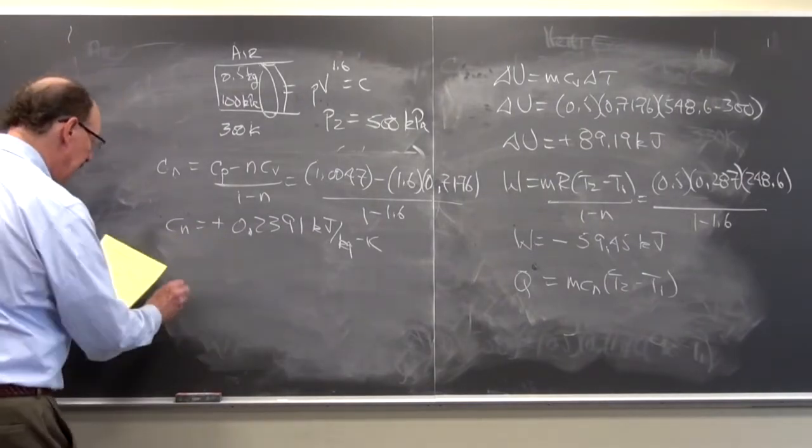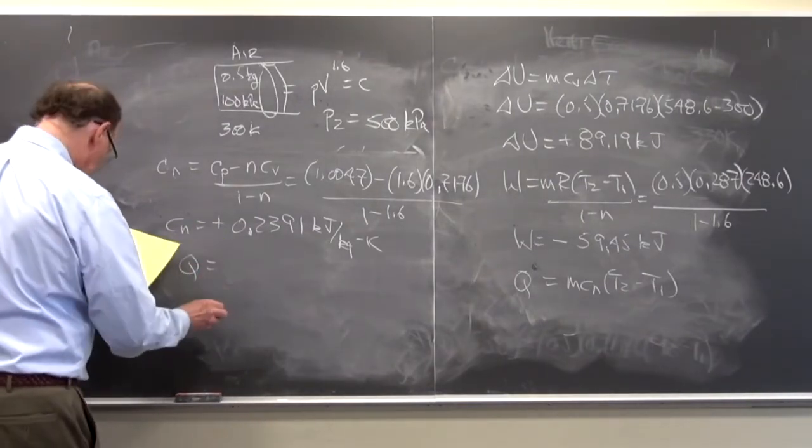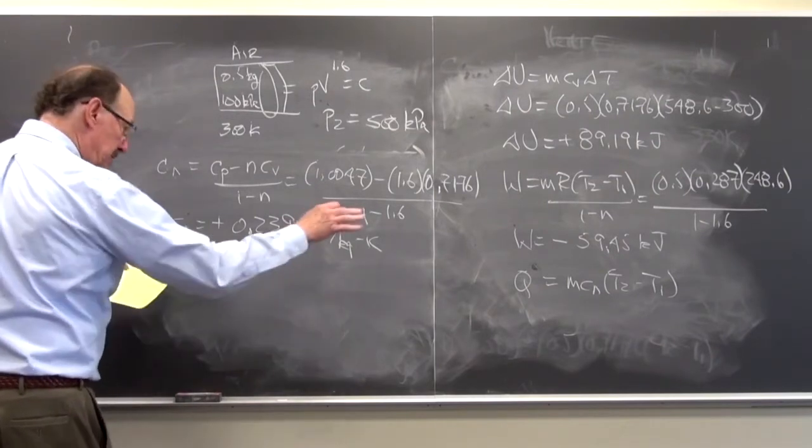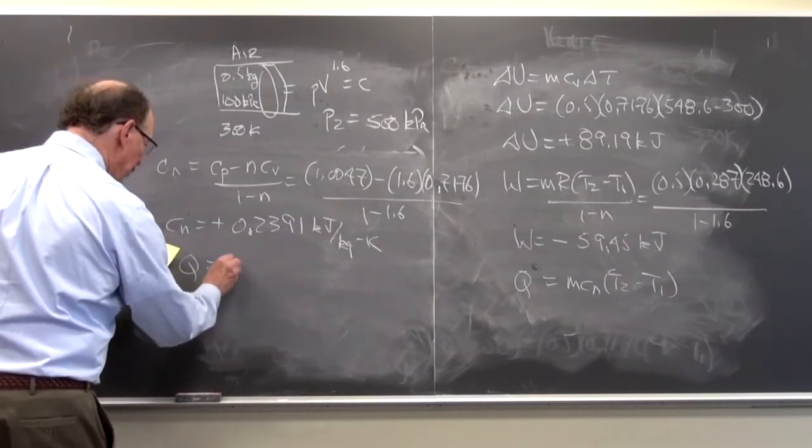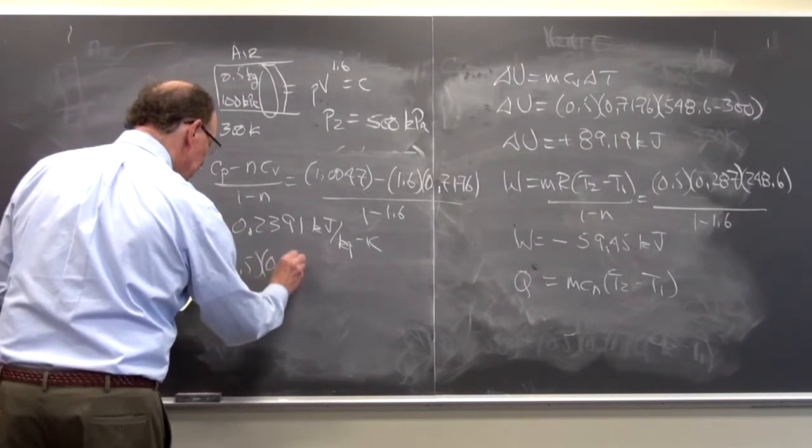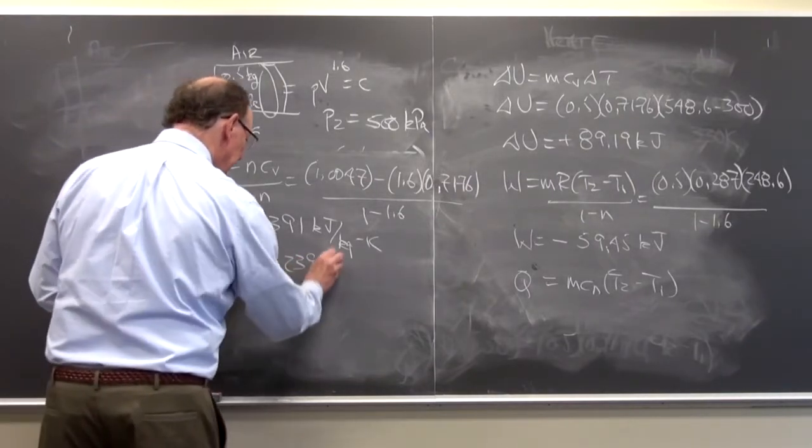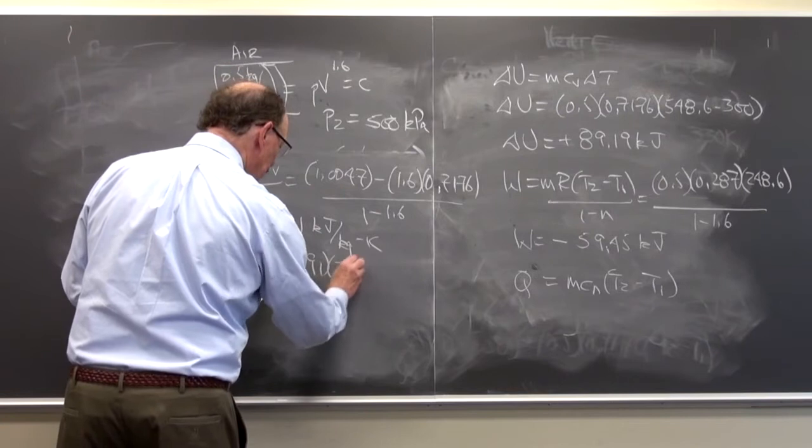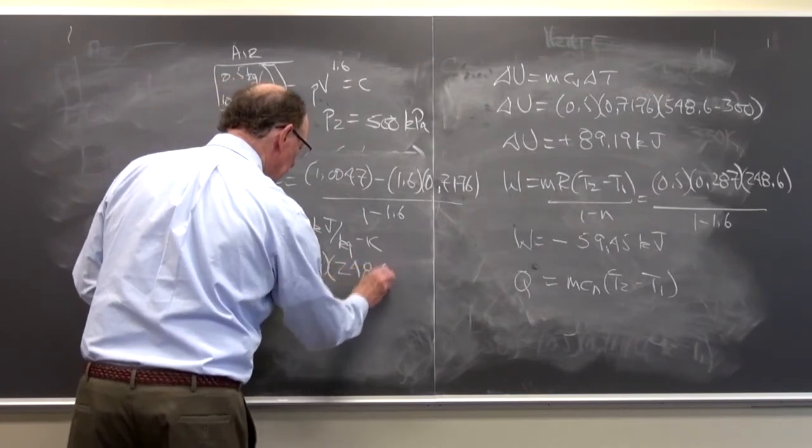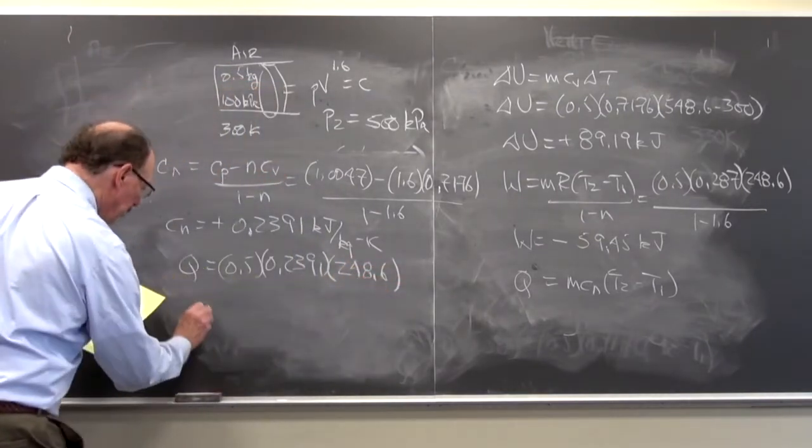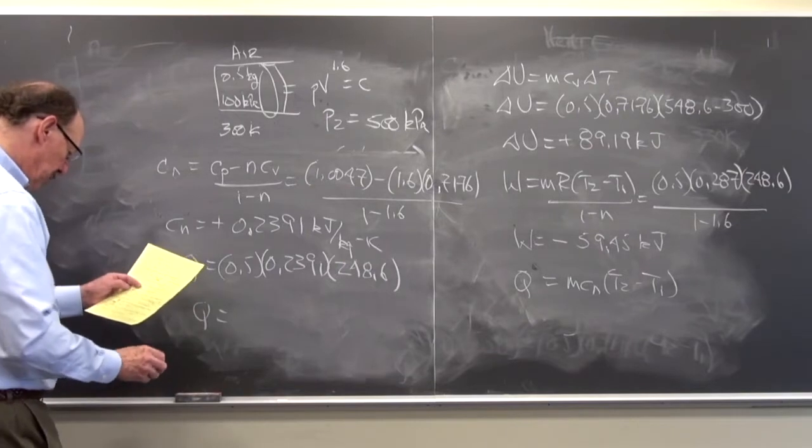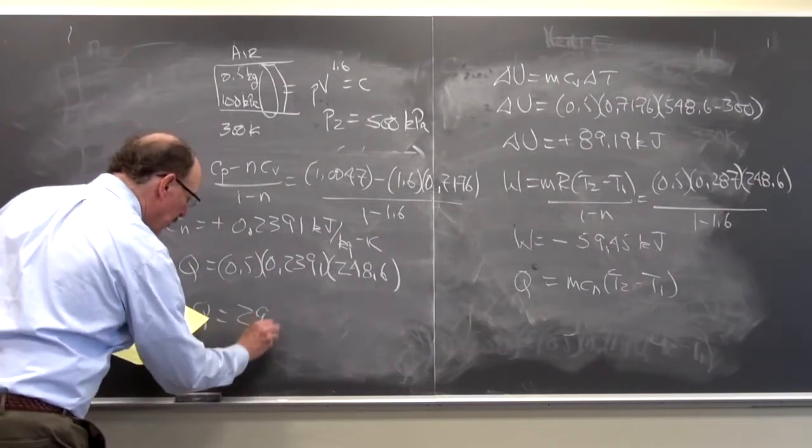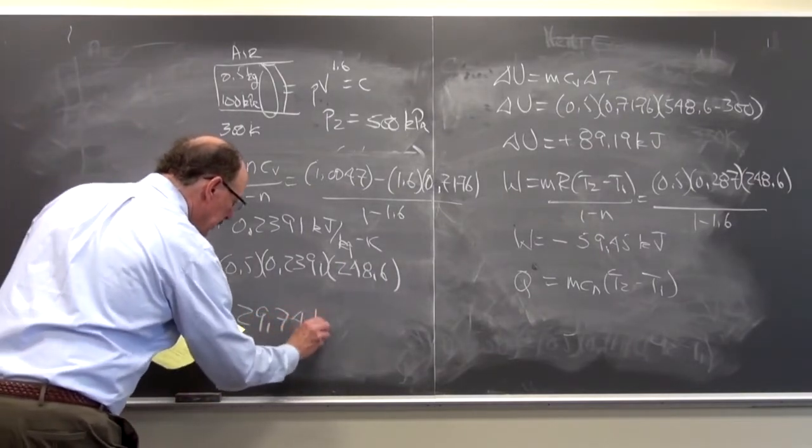So again this is a made up number but it enables us to do the analysis. I get that Q is equal to substituting in 0.5 times 0.2391 times the delta T of 248.6, or I get that Q is equal to 29.74 kilojoules.